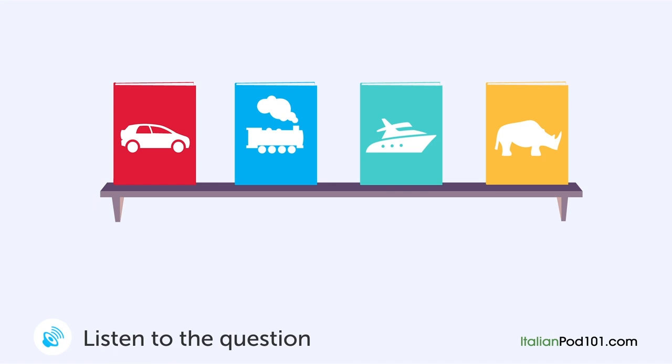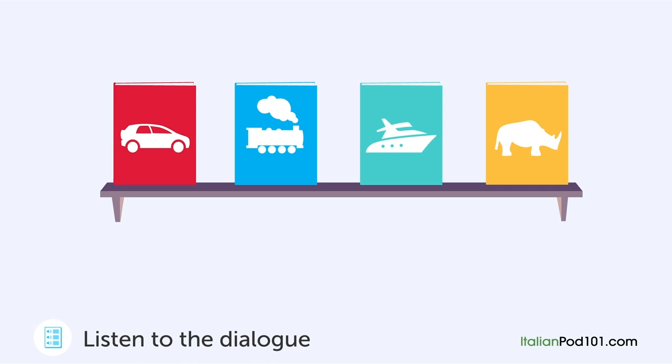A woman is asking a shop assistant in a bookshop for something. [Question: Which book did the woman want to see?] "Excuse me, I'd like to take a look at a book on that shelf." "Which book would you like?" "The book about cars." "Just a moment, please." "This one?" "Exactly." "Here it is."